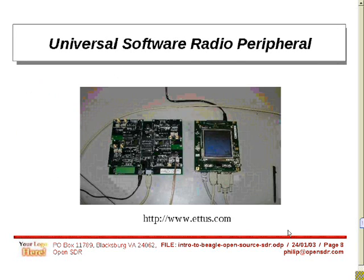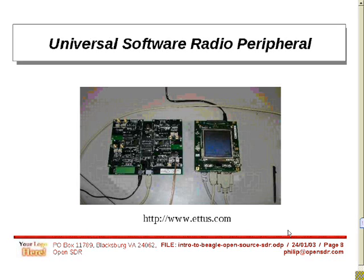On the left there is the USRP — usually pronounced USRP. It connects to the PC with a USB cable. It has positions for four daughter boards, two transmit and two receive, which provide the actual RF interface. There are several different boards available that cover different frequency bands, mostly in the ISM bands at 2.4 GHz and some of the cellular bands. On the right is the OMAP starter kit with the LCD panel on it. I never really did get that connection to work properly because the USRP is USB 2.0 only.